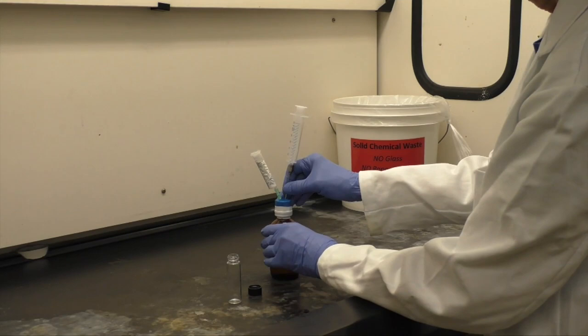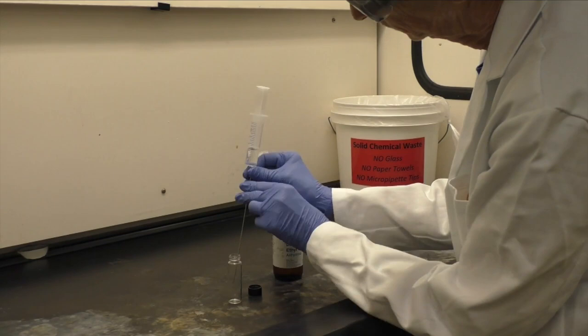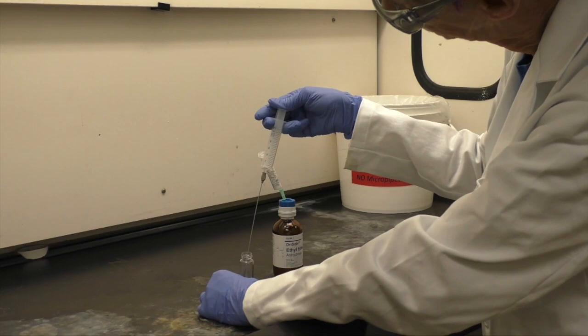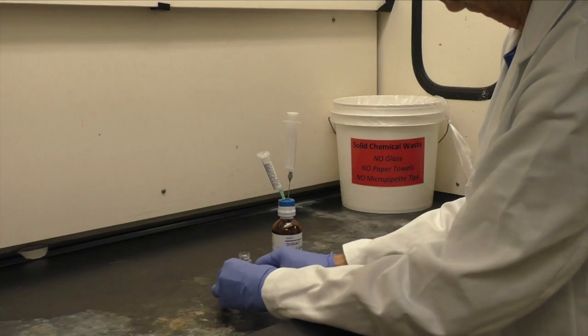Place 4 milliliters of anhydrous diethyl ether into a 4-dram vial using the 10 milliliter syringe and needle. Be careful when putting the large needle back into the bottle. Supporting it near the tip will help.